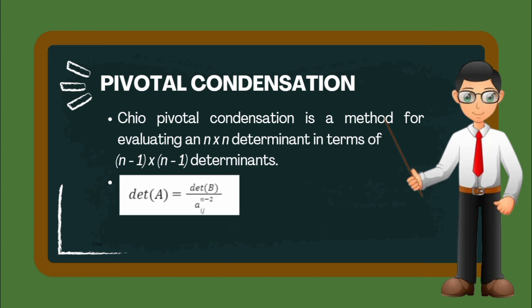The formula for this is determinant of A equals determinant of B all over A_ij raised to n-2.